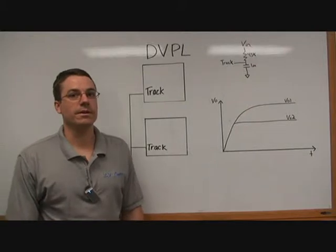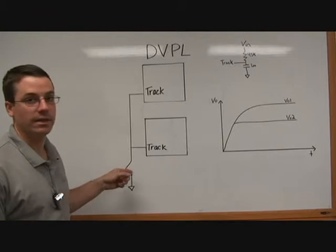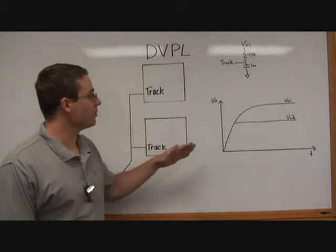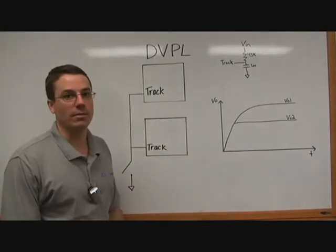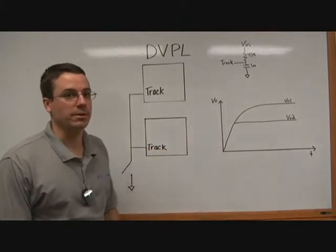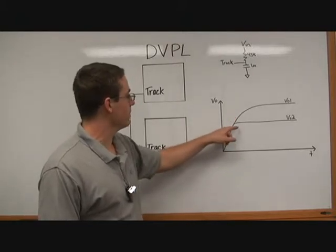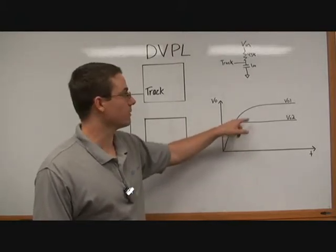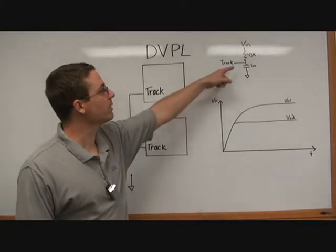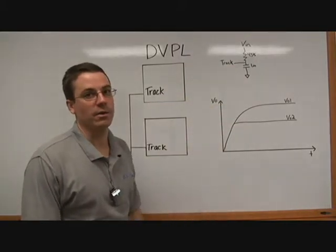The DVPL can also be connected as shown behind me, where the two track pins are connected together and then a series switch to ground. This can be used when both of the rates of rise of the two output voltages are the same and they're clamped to different output voltages. For example, this graph shows that they rise at the same rate and then Vout2 is trimmed to a lesser voltage than Vout1. We can do this because internally we have a 43K resistor and a 1 µF cap, which sets the rate of rise of both converters.